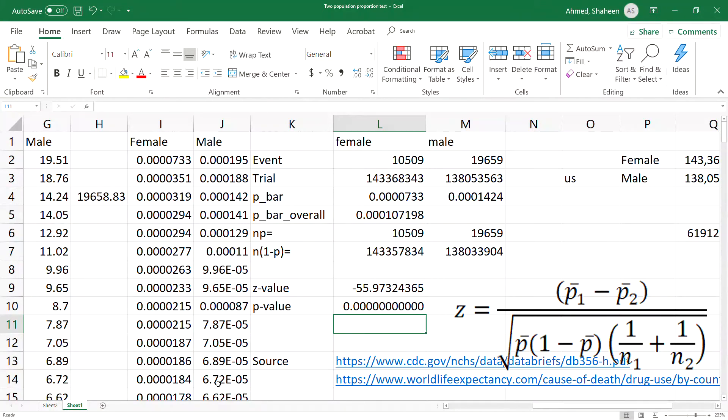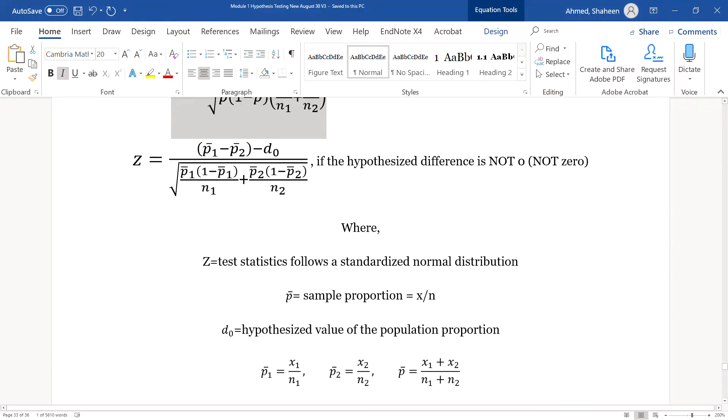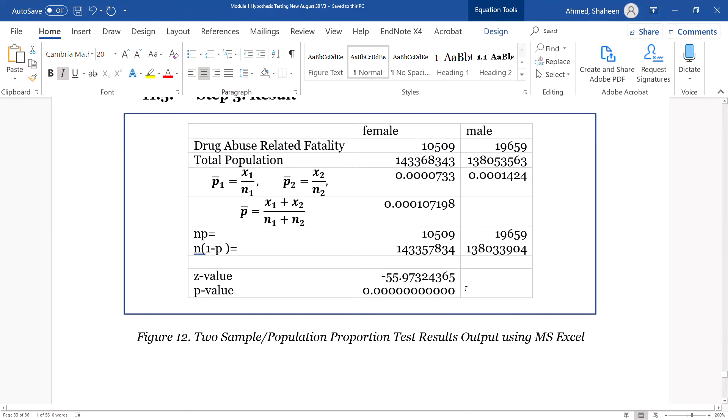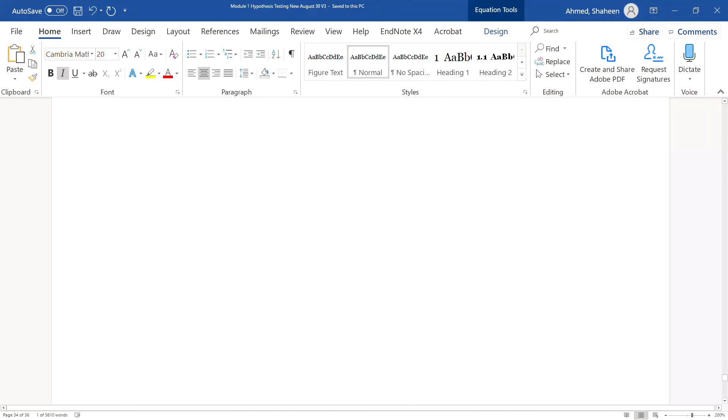Meaning that we reject the null hypothesis. The probability for the null hypothesis is zero - that means it's not going to happen. So we reject the null hypothesis because it will not happen. All the calculations are shown here.